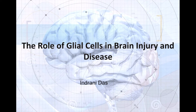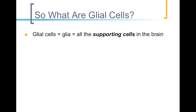Hello everyone, my name is Andrani and I will be presenting about the role of glial cells in brain injury and disease. So our first question is, what are glial cells? Simply put, the term glial cells refers to all the types of supporting cells in the brain. The word glia comes from the Greek word for glue, and just like glue, glial cells are responsible for holding the brain together.